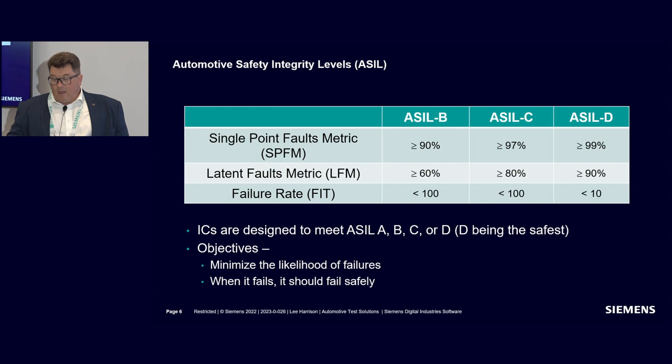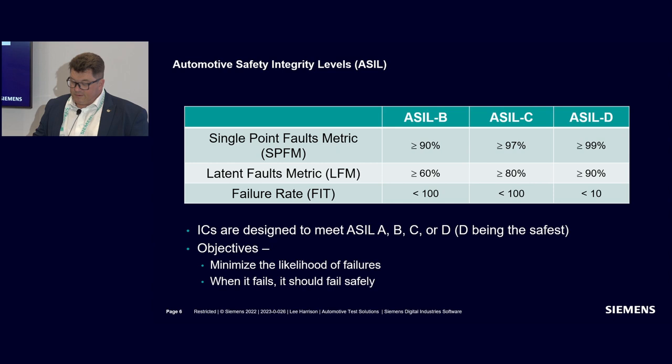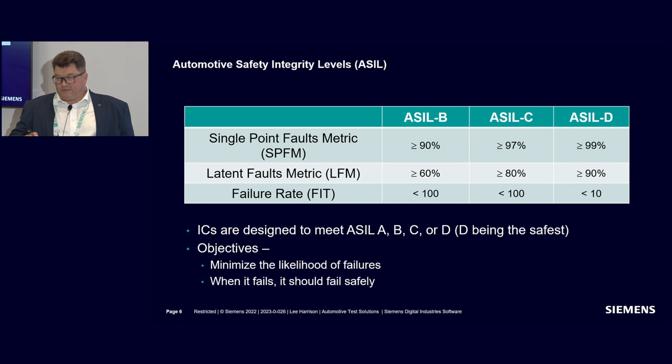For ASIL level B, we need to achieve 90% coverage of single point faults. For ASIL level D — essentially safety critical — we need to be in the 99% range. So it's very important when deciding your safety level that you set the expectation early on in the design phase.